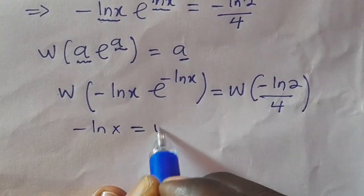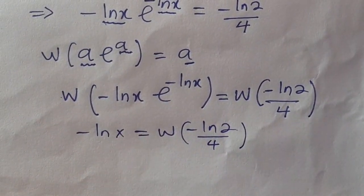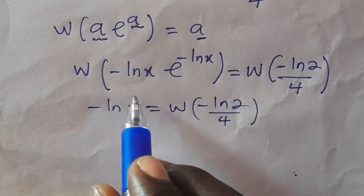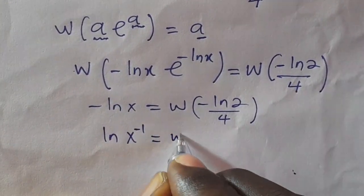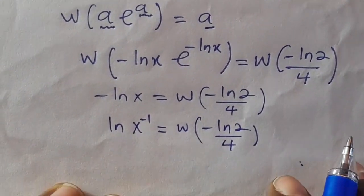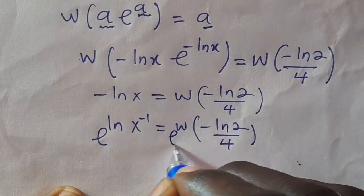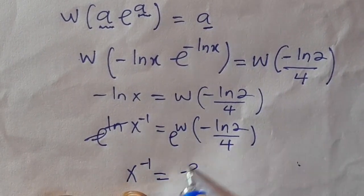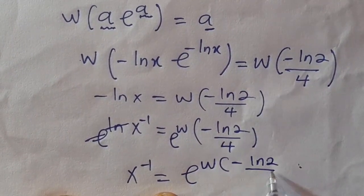So therefore, from here we have to take the negative back. We have ln(x) raised to power minus 1 equals W of minus ln(2) divided by 4. And so from here, by introducing e to both sides, e and ln cancel out, then we are going to have x raised to power minus 1 equals e to the power of W of minus ln(2) divided by 4.